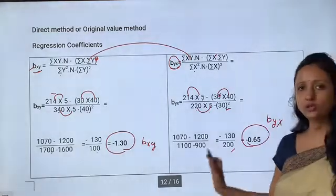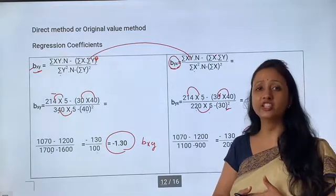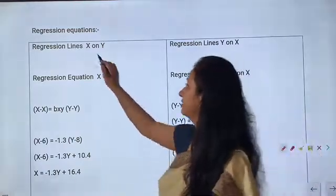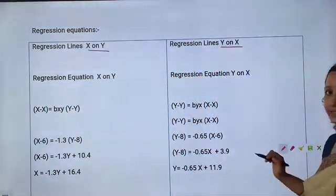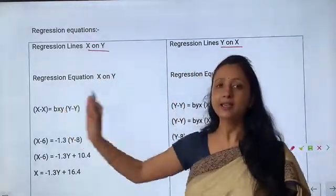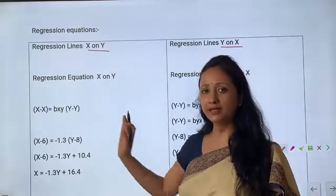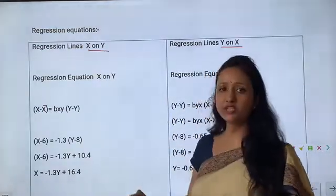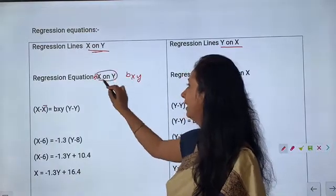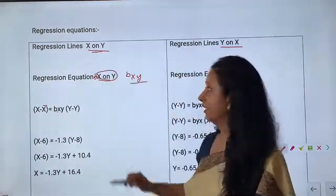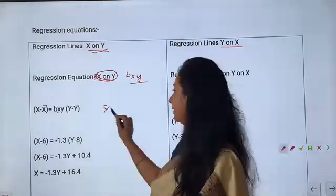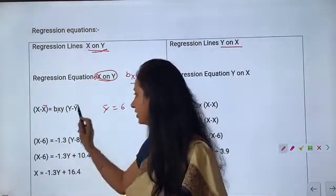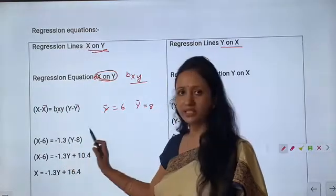Now we will calculate the regression equations. In regression equations we need to find two lines. First is x on y, second is y on x. For x on y: x comes first, so x's digits come first. The formula is x − x̄ = bxy(y − ȳ). The coefficient used here is bxy.